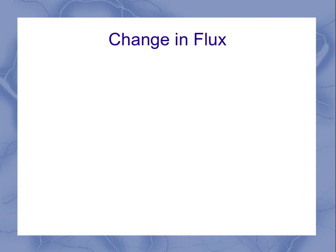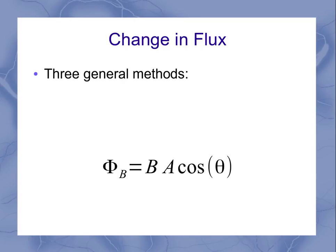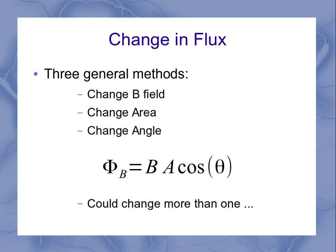So how do I change the flux? There's three general methods. If you look back at the equation for magnetic flux that we've already covered, it's pretty easy to see what those three methods are. I could change the magnetic field, I can change the area, or I can change the angle. Changing any one of those three things will result in a change in flux. I could also change more than one at the same time, but most of our intro problems aren't going to have that.